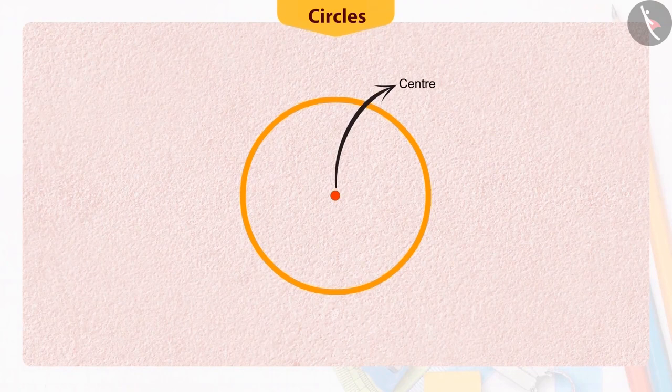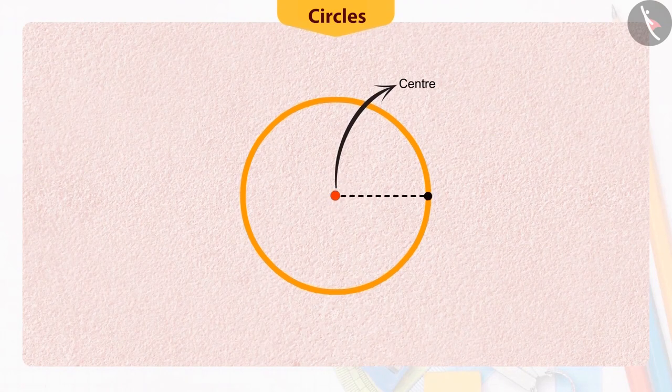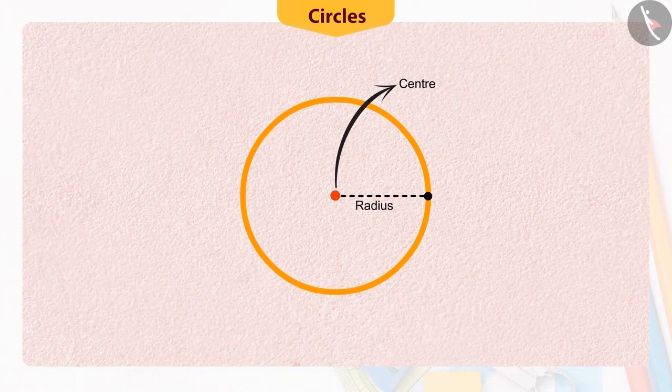The fixed point is called the center of the circle and the fixed distance is called the radius of the circle.